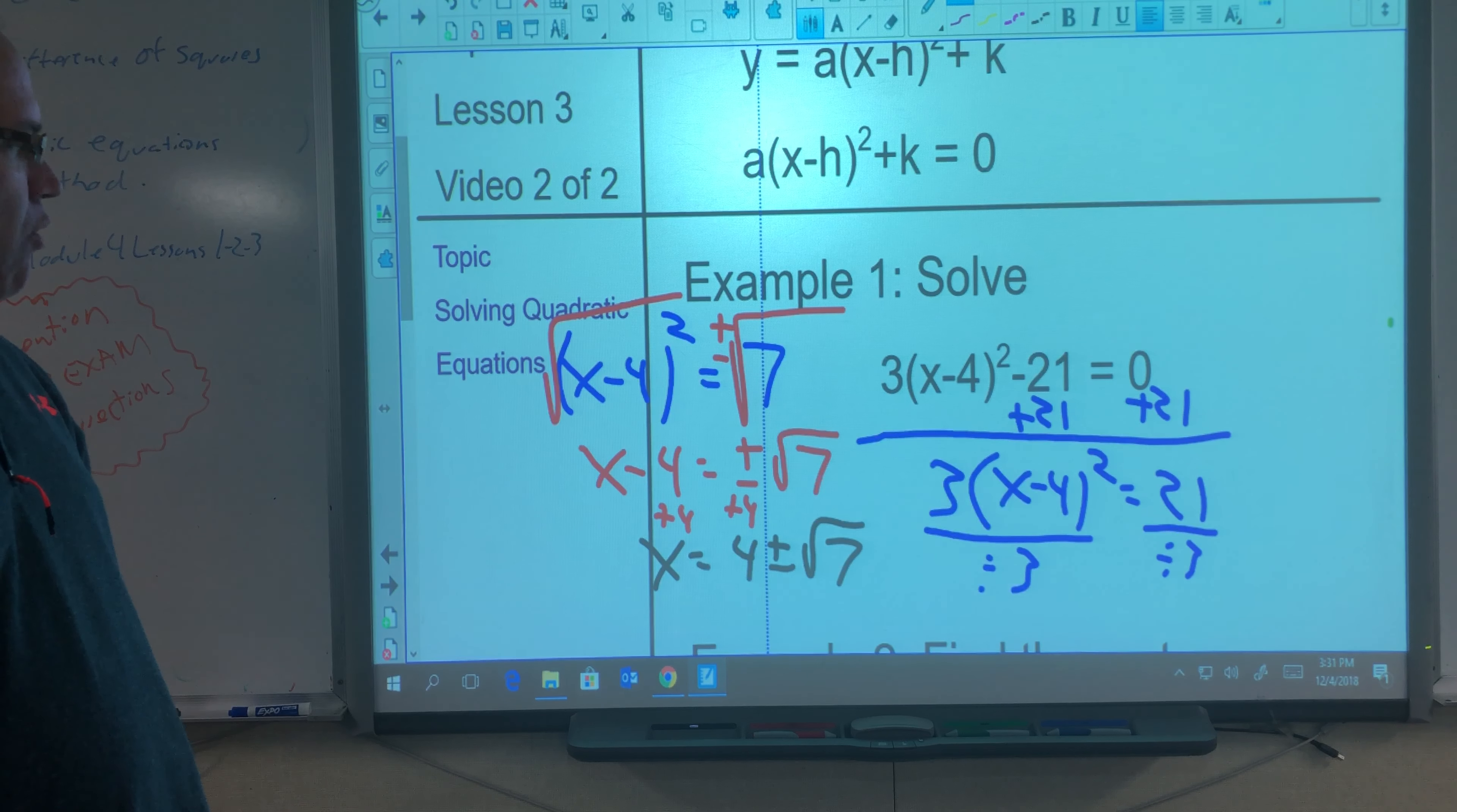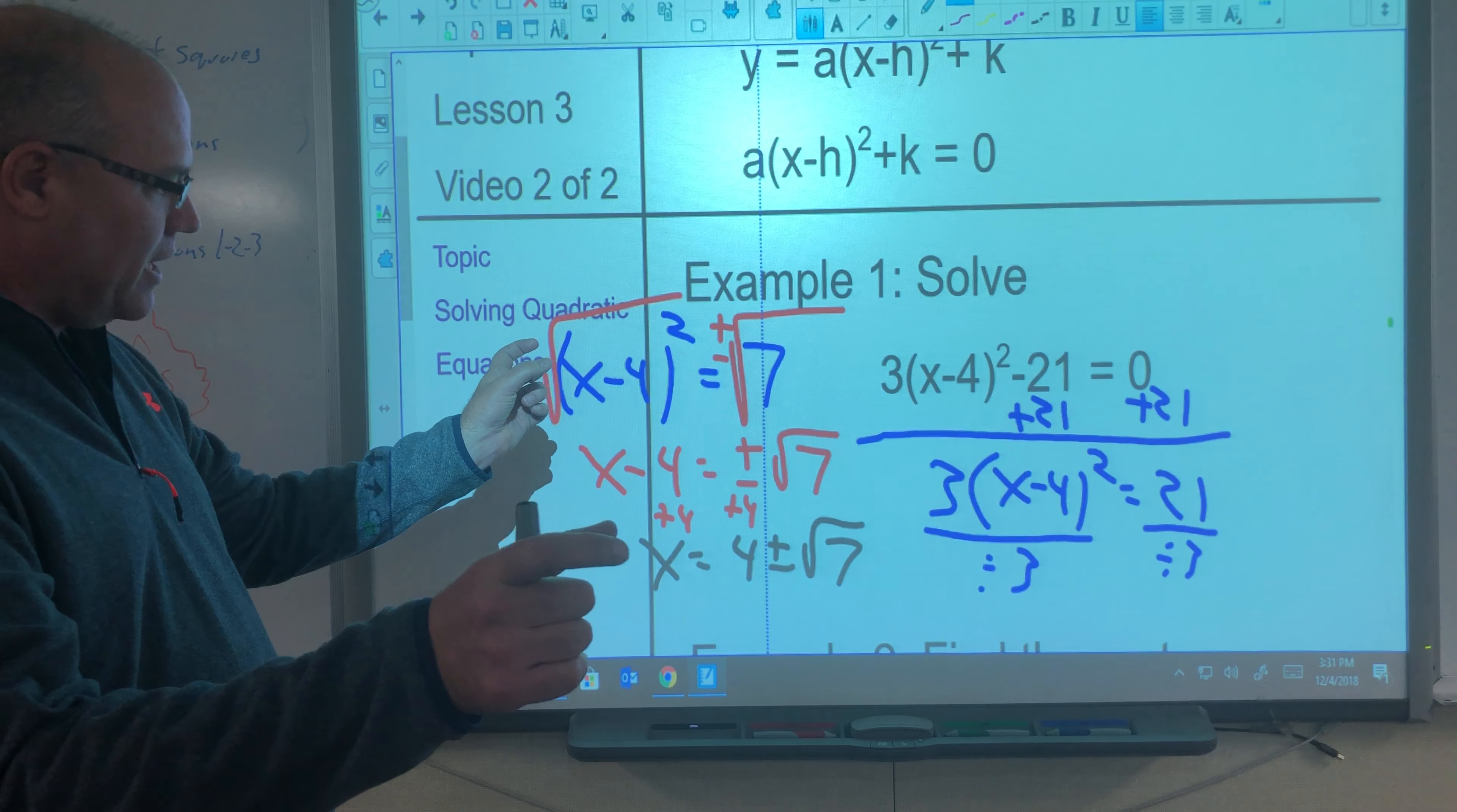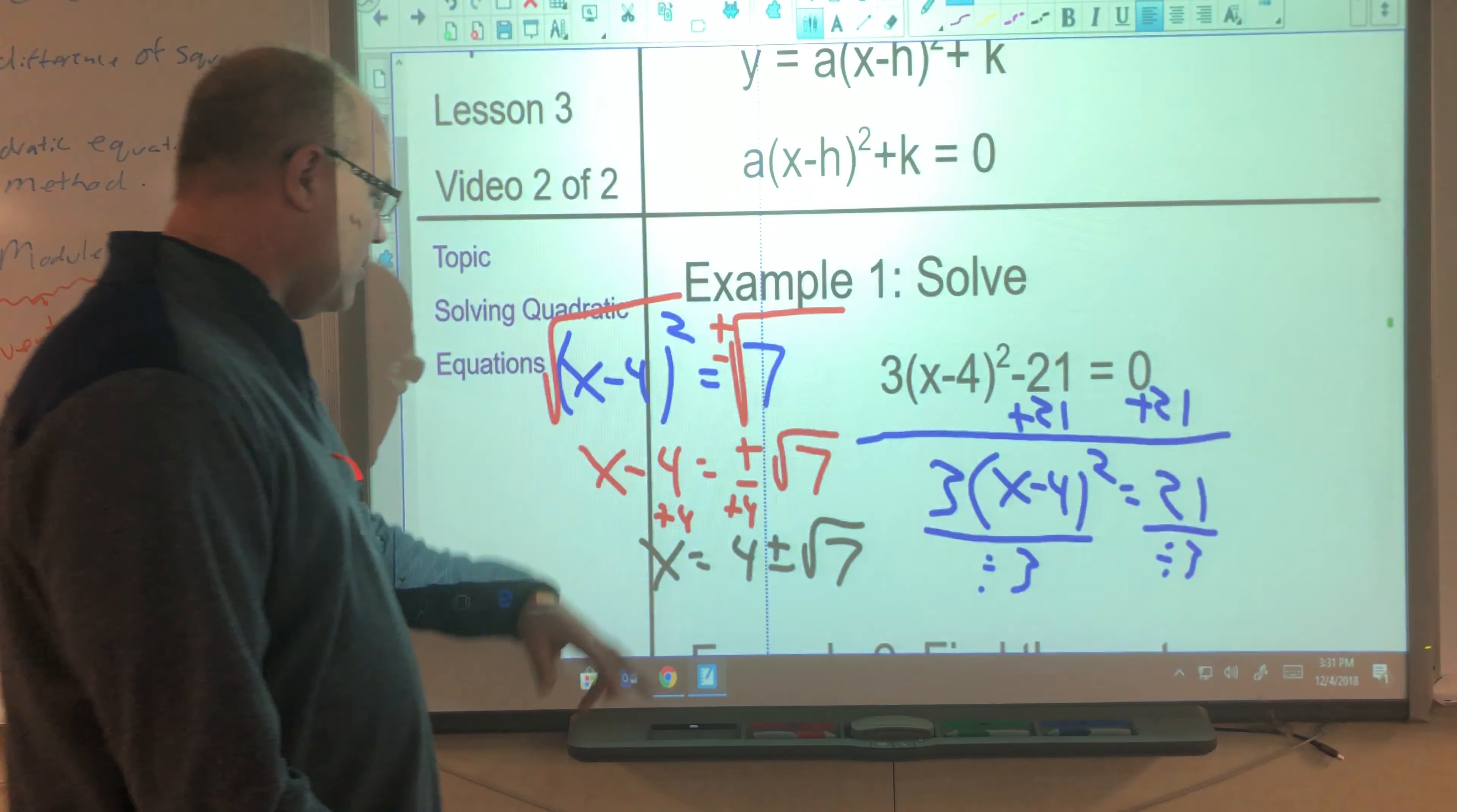If I want the approximate solution, what's the approximate square root of 7? Let's see, square root of 4 is 2, square root of 9 is 3. So it's a little bit closer to the 9 than 4, so we're going to stay a little bit closer to the number 3. Maybe 2.6, 2.7. We'll call it 2.7.